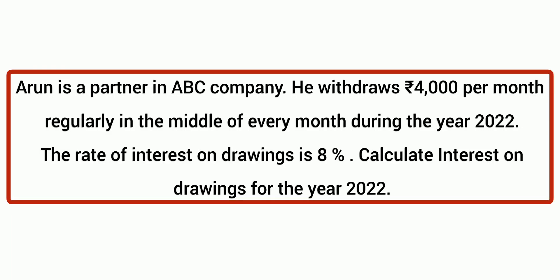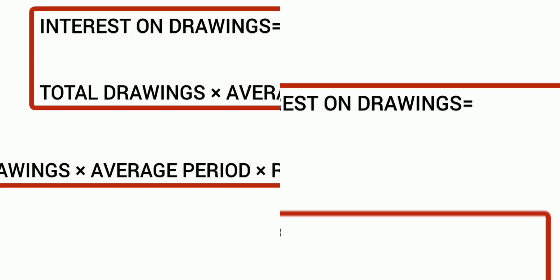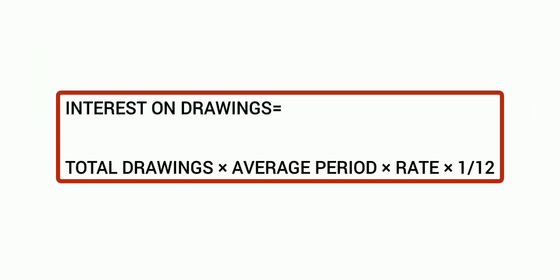Calculate interest on drawings. Arun is a partner in ABC company. He withdraws 4,000 per month regularly in the middle of every month during the year 2022. The rate of interest on drawings is 8%. Calculate interest on drawings for the year 2022.